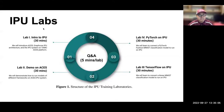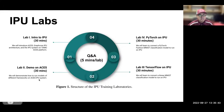This IPU lab is divided into four sessions. The first lab is about the introduction to IPU — we will introduce the ACES project, GraphCore, IPU Architecture, and the IPU system on the PAMO ACES platform. The second lab is a demo on ACES, demonstrating how to run models in TensorFlow and PyTorch. The third lab covers TensorFlow on IPU, converting a Keras MNIST classification model. The fourth lab covers PyTorch on IPU, converting a PyTorch Fashion MNIST classification model.